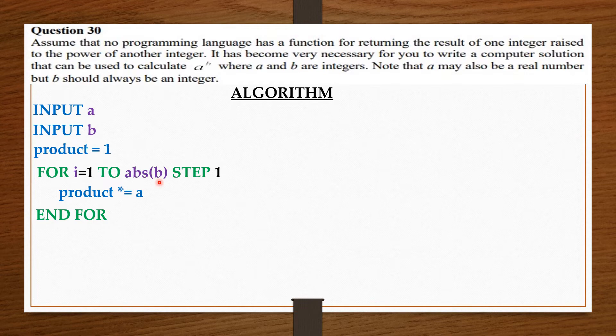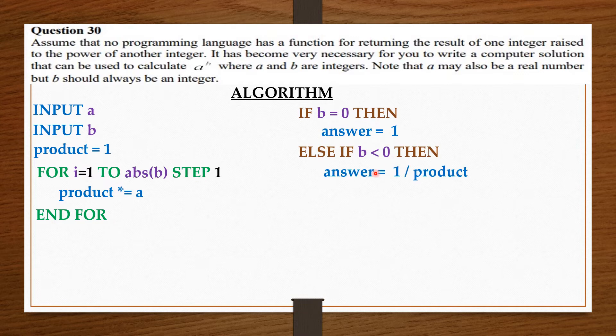Now, we come here and see if the b was 0, then the answer should be 1. Else, if the b was a negative number, then the answer should be 1 over the product. Else, the answer should be equal to the product. End if.